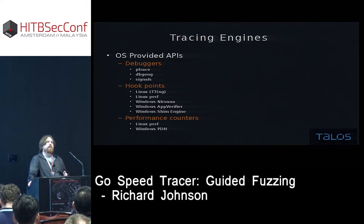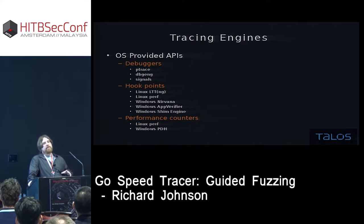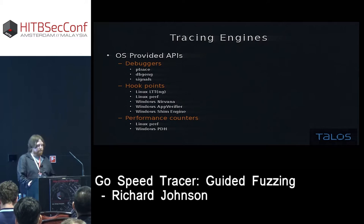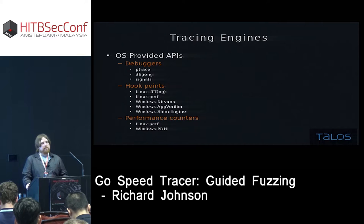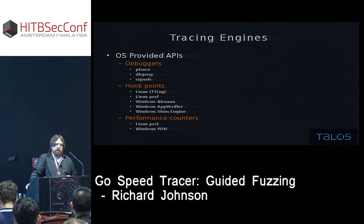AppVerifier is really cool — it exports a layer that lets you define data structures for hook points you need, and it's fully supported by the system. Closer to today's topic is the Linux perf subsystem, which has typically been used to expose counters like cache misses and instruction timing for profiling, but has now been extended to include wrappers for things like the Intel PT infrastructure as well. On the Windows side, there's an API called Windows PDH — poorly documented — which is a performance monitoring toolkit.